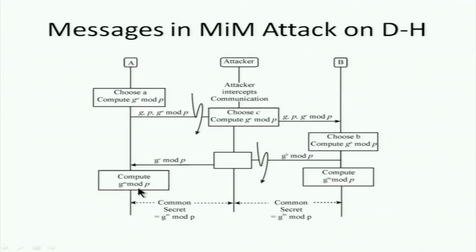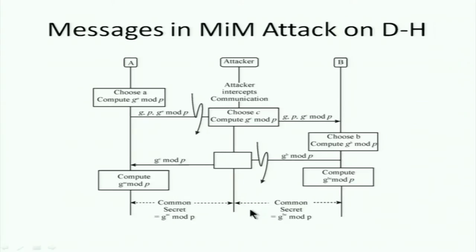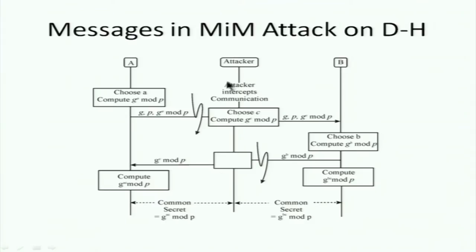So A computes G^ac mod P as her shared secret with what she thinks is B, and B computes G^bc mod P. Now every message A sends is encrypted with G^ac mod P — a secret shared between her and the attacker. The attacker decrypts it, reads it, possibly modifies it, re-encrypts it with G^bc mod P, and sends it to B. Everything is intercepted, read, possibly changed, and re-sent — an active man-in-the-middle attack.